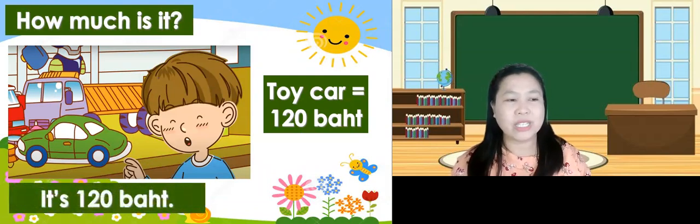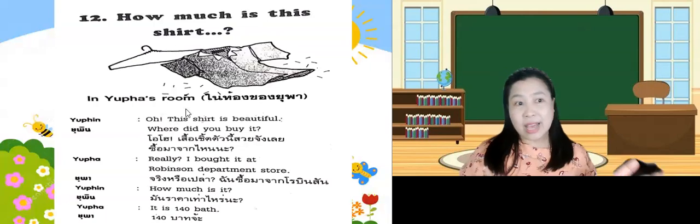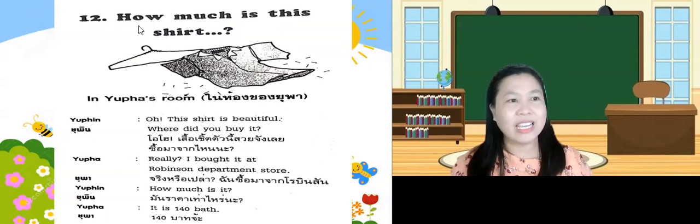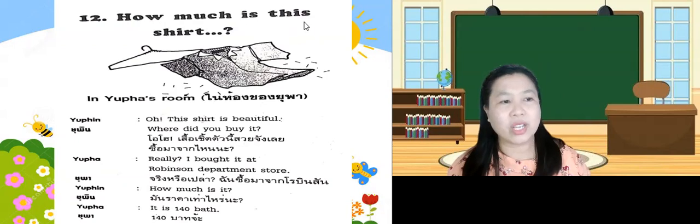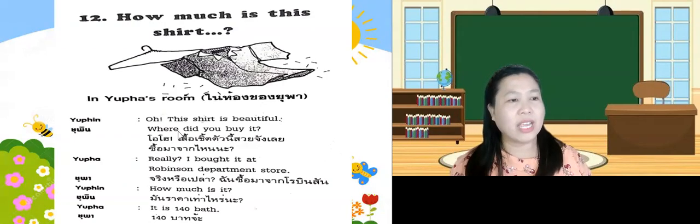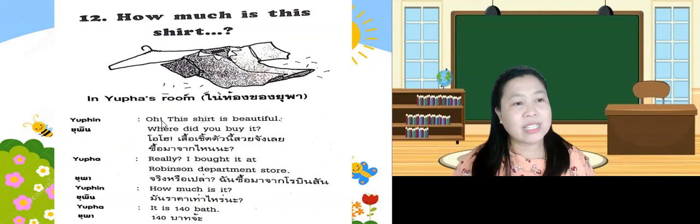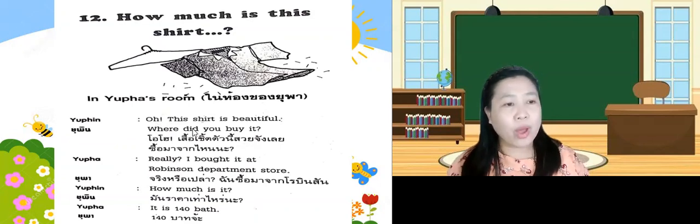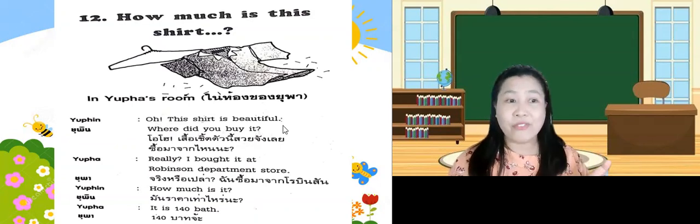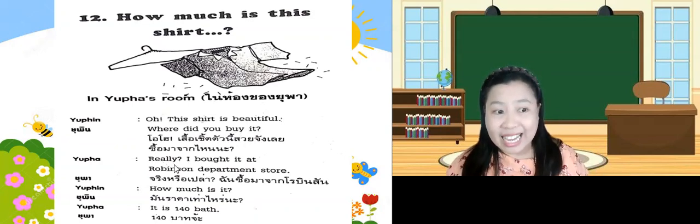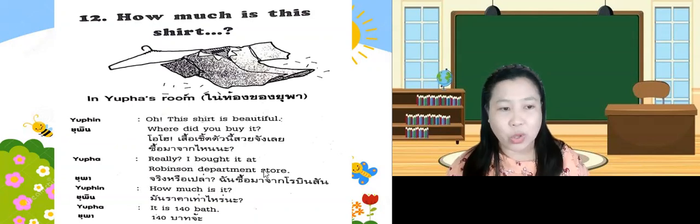Now let's have a short conversation entitled 'How Much Is This Shirt?' — in your classroom. Let's see: 'Oh, this shirt is beautiful! Where did you buy it?' 'Really? I bought it at Robinson Department Store.'